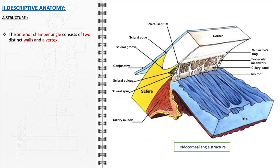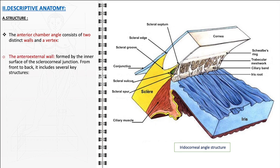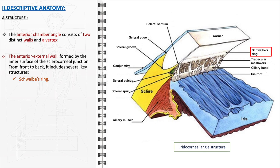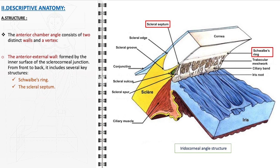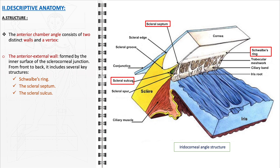The anterior chamber angle is composed of two distinct walls and a vertex. The anterior external wall is formed by the inner surface of the sclerocorneal junction and comprises several integral structures: Schwalbe's ring, located at the most anterior part of the trabecular meshwork, marks the boundary where the clear cornea transitions to the fibrous sclera. The scleral septum is a thin partition of scleral tissue that contributes to the stability and shape of the angle. The scleral sulcus is a groove or depression in the sclera adjacent to the scleral spur.